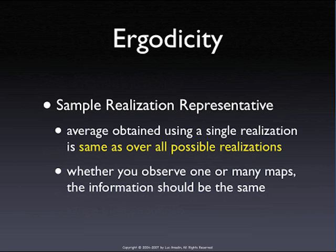There are a couple of concepts in the literature worth explaining. The concept of ergodicity is essentially yet another way of making sure that your single data point — your pattern — can actually be treated as consisting of multiple pseudo observations. Whether you look at that single map you actually have, or if you had the luxury of looking at multiple maps all generated by the same process, the summary statistics would be the same. Whether you compute the average over the one map you have or over multiple realizations, it would be the same average.